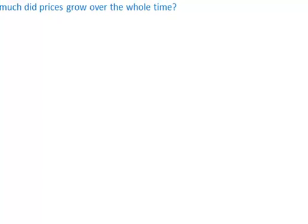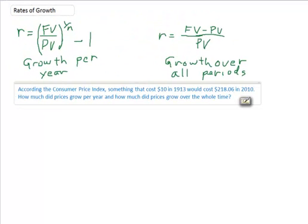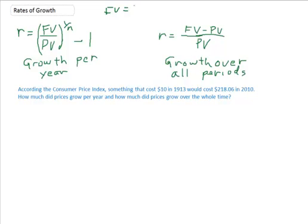If you remember future value, let's just do a quick review here. Future value equals present value times 1 plus r raised to the n. If you solve for r, you get this thing over here. And if you solve for r but treat n as equal to 1, you get this over here. So one time period. If you have something in the present, how fast will it go over the whole time period? But we'll look at that a little bit later. Let's look at a problem to kind of get a better feel for these two.